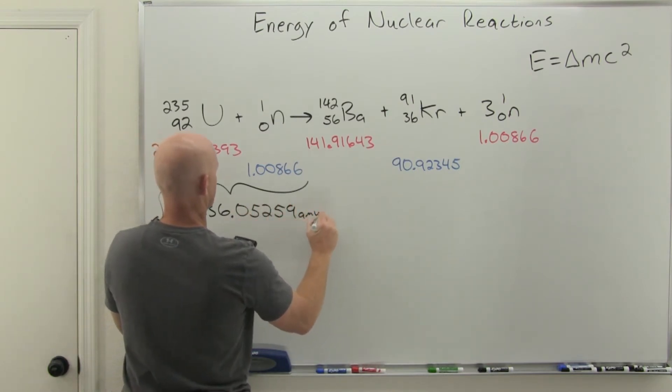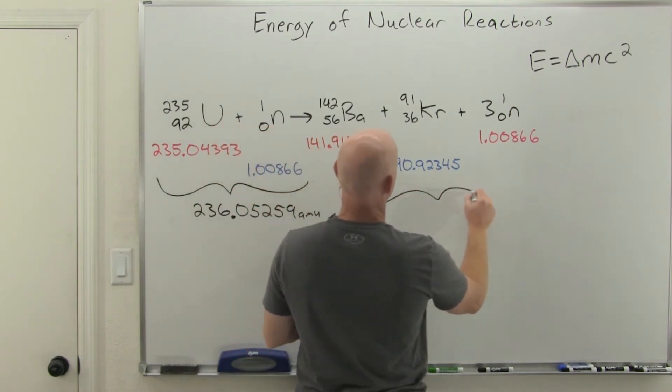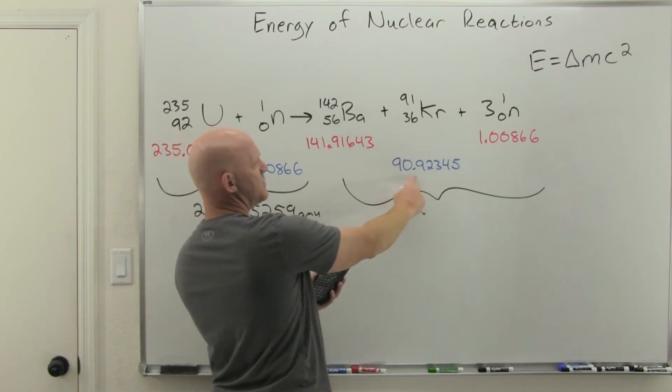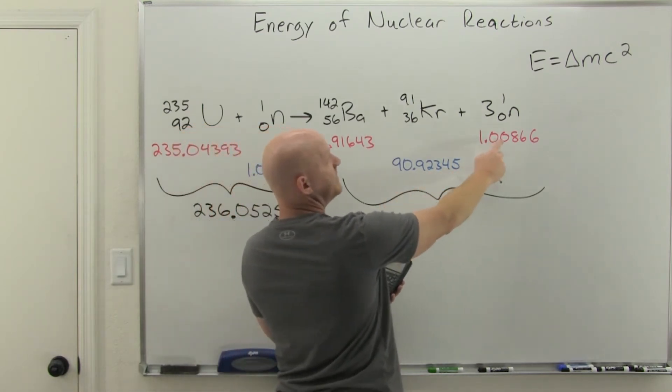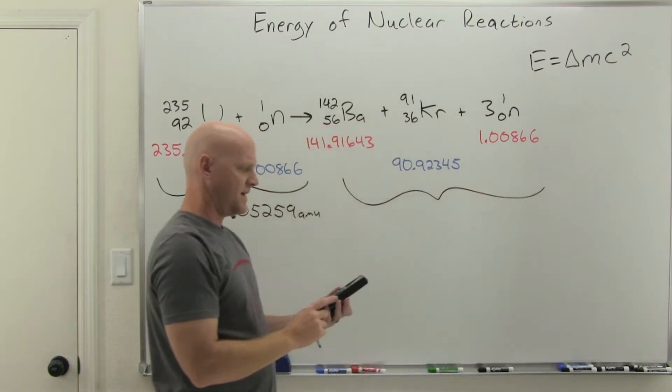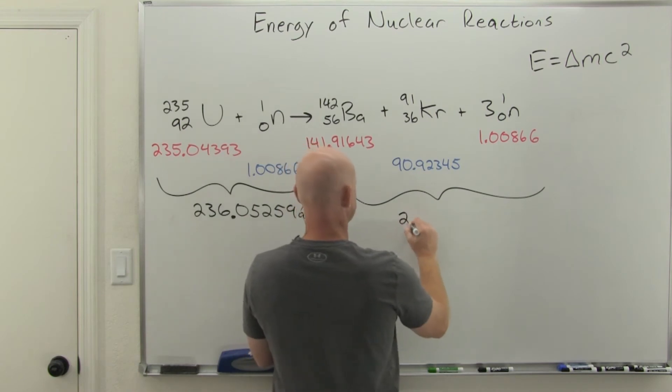If we do the same thing on the product side, we're going to add up 141.91643 plus 90.92345 plus three neutrons, so three times 1.00866. If we do that, we're going to get 235.86586 AMUs.